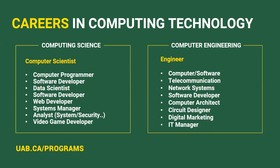You can see further differences between the two with the careers that you can pursue. Computing science will lead you to become a computer scientist, whereas computer engineering will lead you to become an engineer. The career prospects within computing science tend to lean deeper towards software and analysis, like computer programmer, software developer, data scientist, and video game developer.